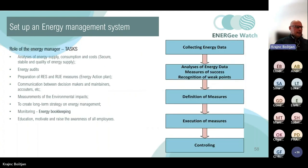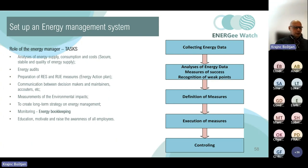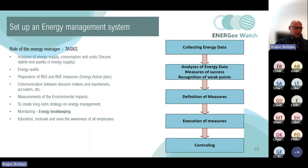An energy management system is a set of interrelated or interacting elements of a plan which sets energy efficiency objectives and the strategy to achieve them, according to Directive 27 from 2012. This system allows public bodies to better manage energy consumption, including monitoring performance indicators, collecting and analyzing energy data, defining weak points, planning investment measures to reduce energy use, achieving savings by optimizing existing systems, implementing measures, and establishing monitoring, controlling, and verifying systems.